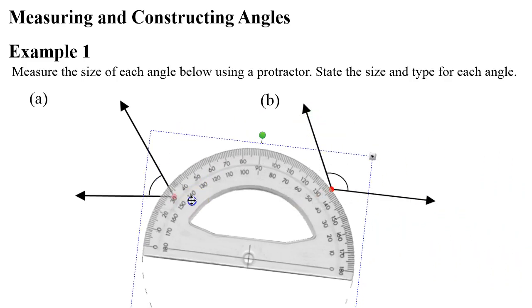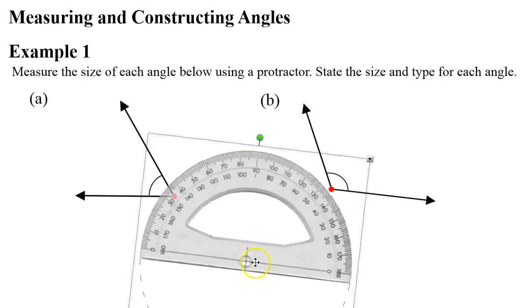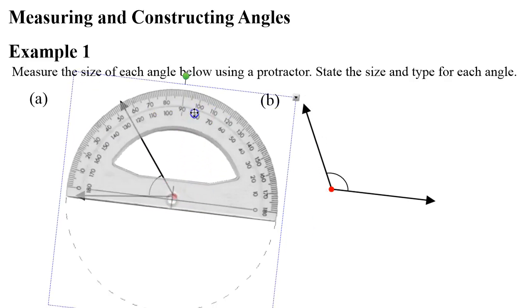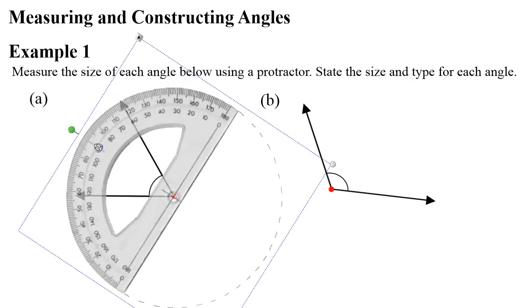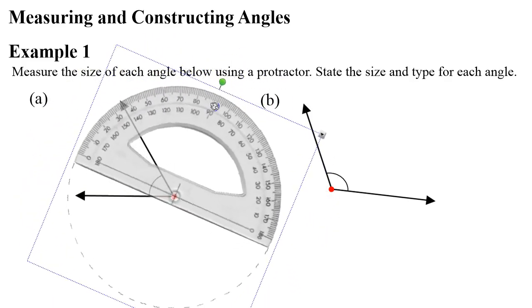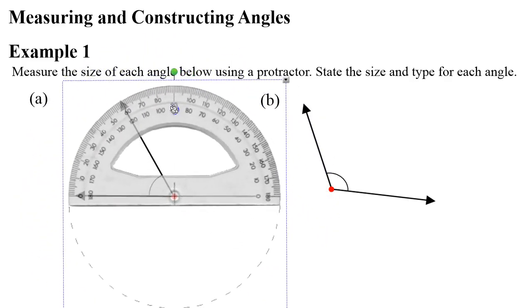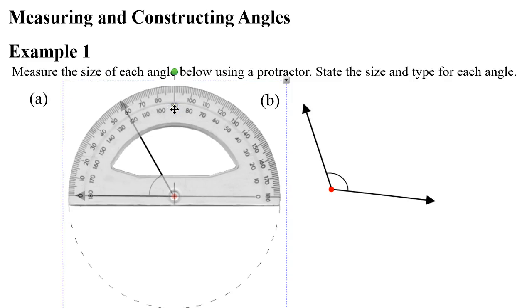So the first thing we need to do is grab our protractor, and you'll notice you have a center point on it, which needs to go over the vertex of the angle, or the red dot in this particular case. Once you've done that, you can turn your protractor until one of the arrows on your angle points to a zero. So we can see it's pointing to a zero here.